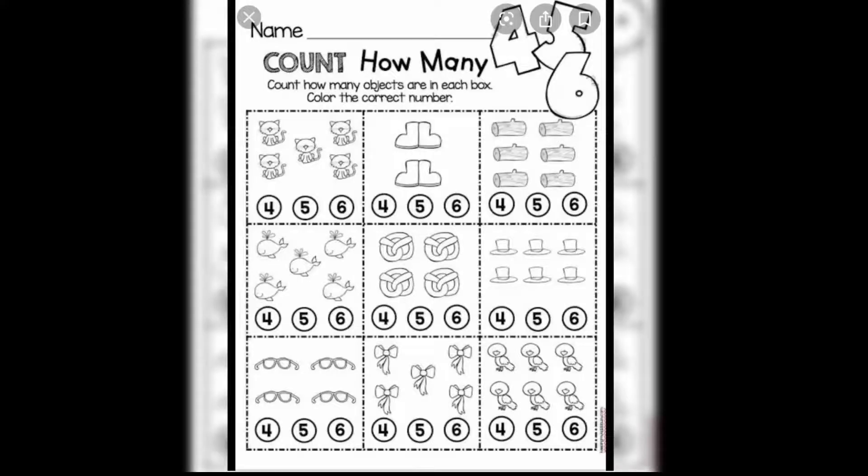Now we will be doing an activity on numbers. In this worksheet, you will be counting the number of objects in each box and color the correct number written below. You can take your parents' help.